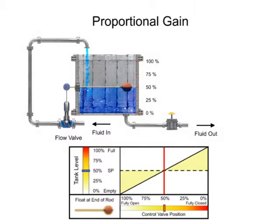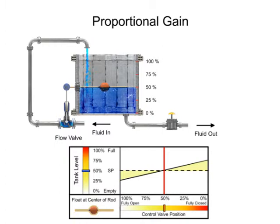Positioning the float to the midpoint of the bar increases the gain. The valve fully opens when the level drops to 25% and fully closes when the level rises to 75%.